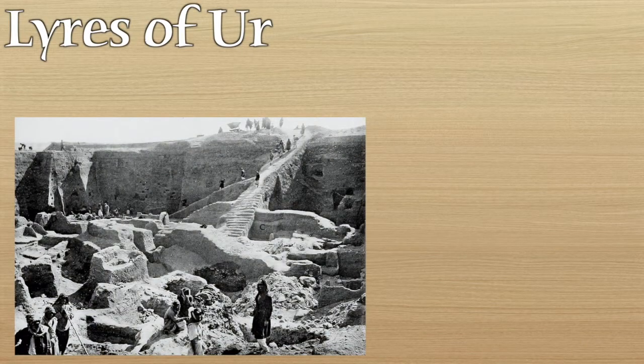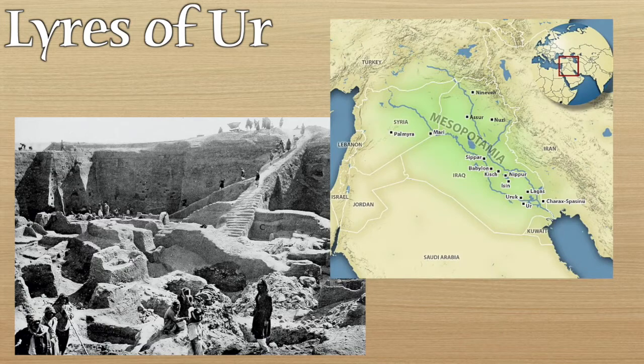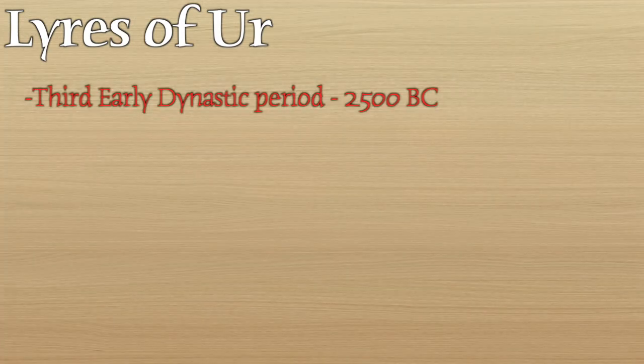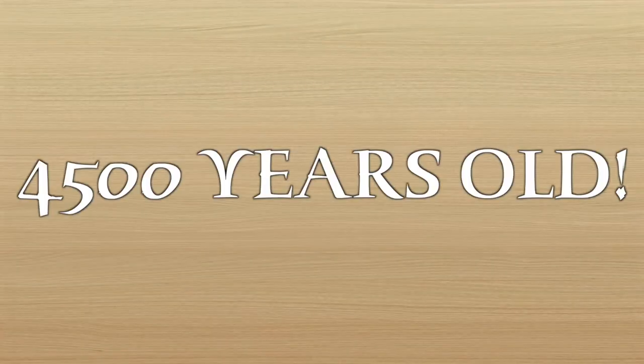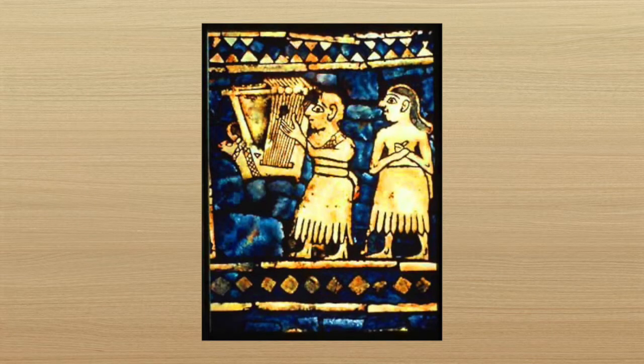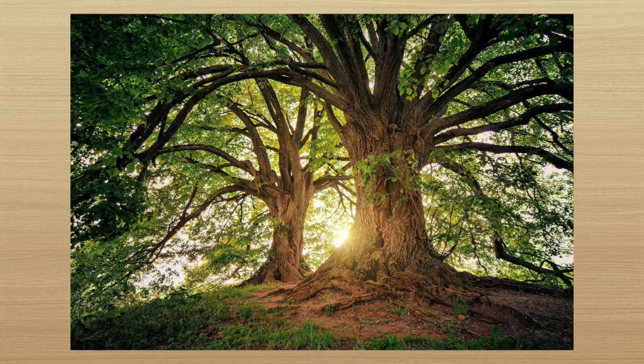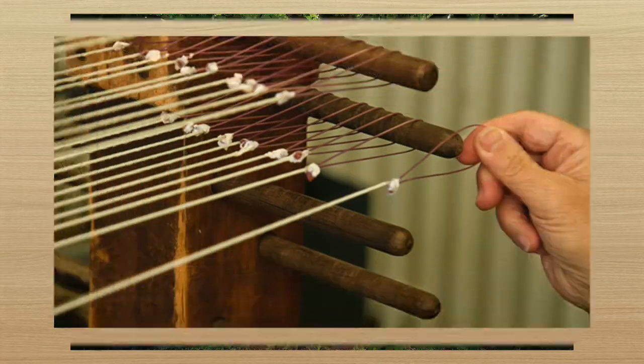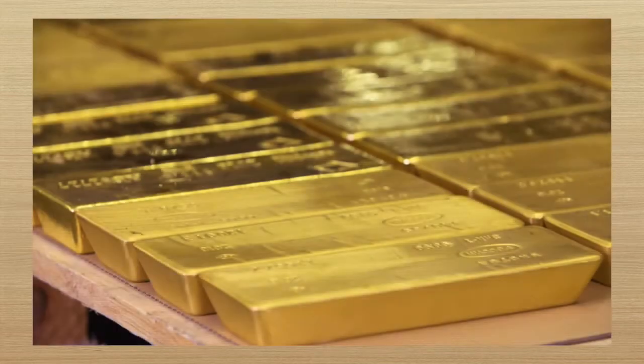Speaking of lyres, the Lyres of Ur were discovered in the Royal Cemetery of Ur, located in what is modern day Iraq, but at the time was within ancient Mesopotamia. They date back to the third early dynastic period of ancient Mesopotamia around 2500 BC, which makes them around 4,500 years old. Now that's quite old, but they didn't survive for that long completely unscathed. Given that they were made of wood, which rots over time, and had strings made of presumably guts or animal hair, most of the lyres had been reclaimed by nature by the time they were discovered. However, some parts of the instruments were decorated with non-perishable materials like gold and silver, so those parts all survived.